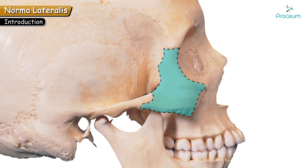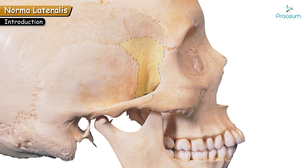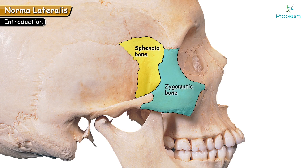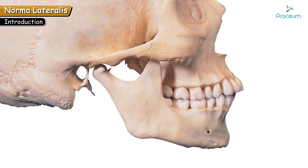The cheek bone present on the lateral side is the zygomatic bone, which forms the inferior and lateral boundary of the orbit. There is also a bone called the greater wing of sphenoid, which is present between the zygomatic bone anteriorly and the squamous part of the temporal bone posteriorly. We can also appreciate the lateral surface of the mandible in this view.